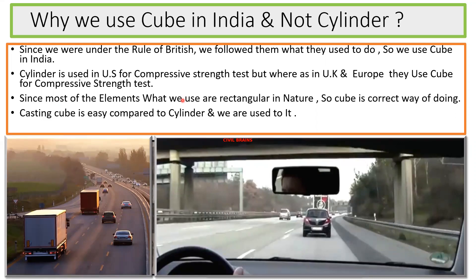On the other side, the US people say that even though you're using a cube, the strength you get from the cube is more compared to the cylinder. That means by taking cube strength, we're actually overestimating the capacity. So in order to take that into consideration, the US people use the cylinder.